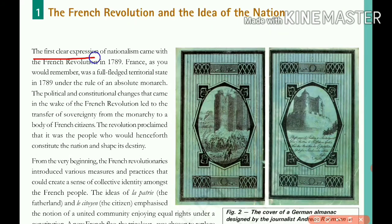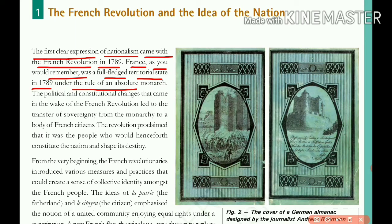The first clear expression of nationalism came with the French Revolution in 1789. France was a full-fledged territorial state in 1789, under the rule of an absolute monarch. France was completely under monarchical control. The political and constitutional changes that came in the wake of the French Revolution led to the transfer of sovereignty from the monarchy to a body of French citizens.